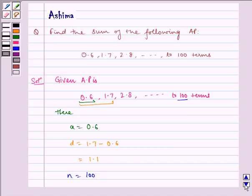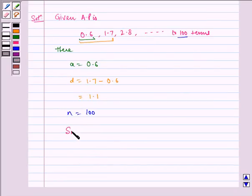Now applying the formula we discussed in the key idea: Sn equals n by 2 multiplied by 2a plus (n minus 1)d.